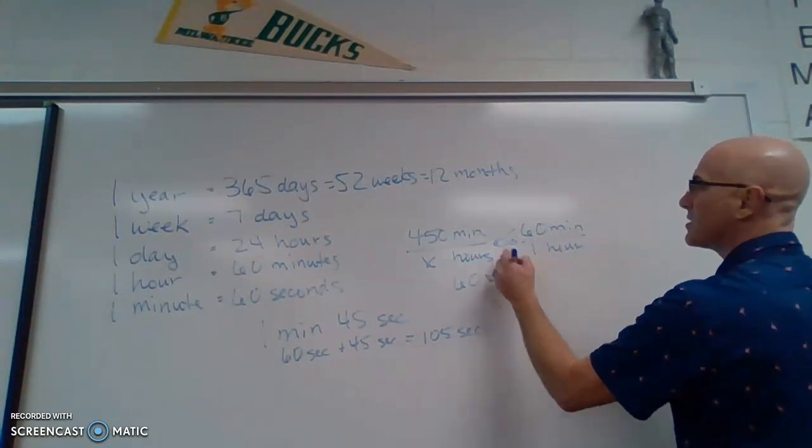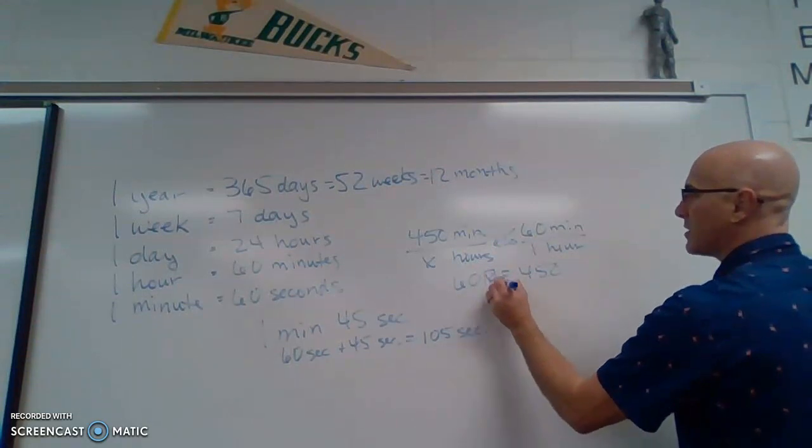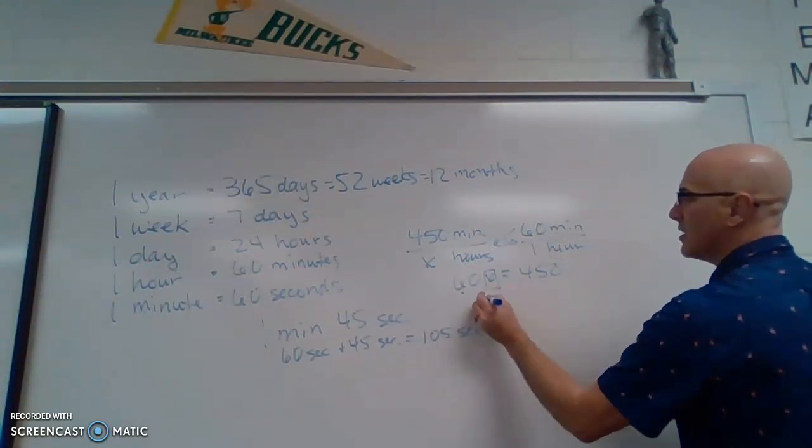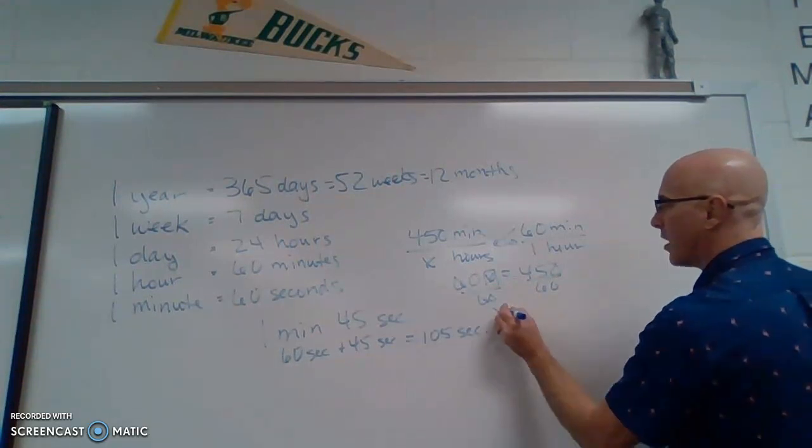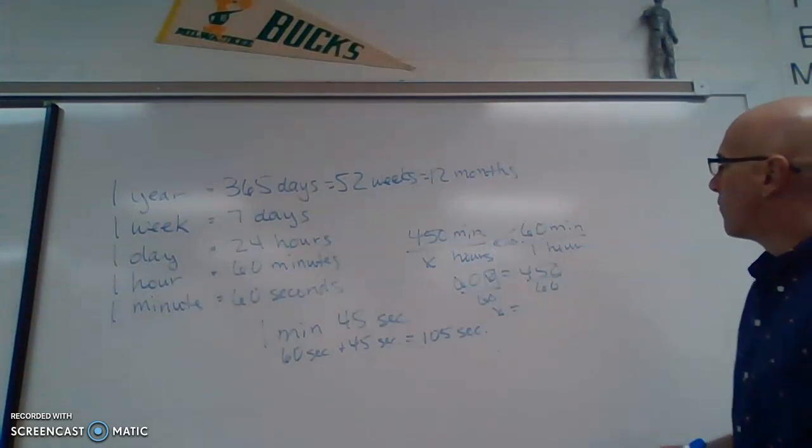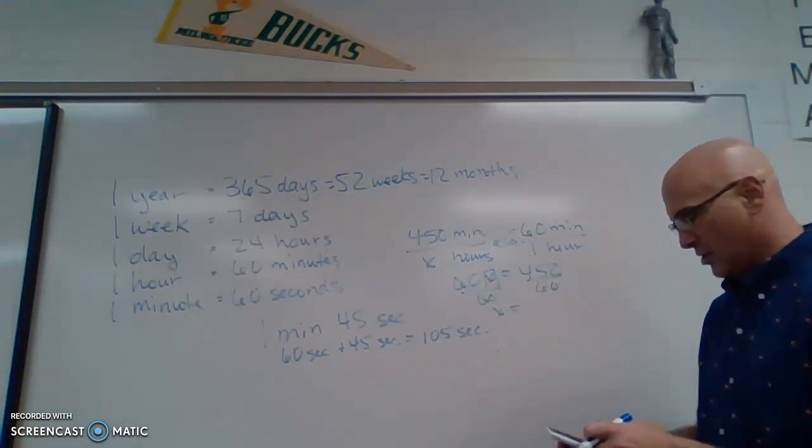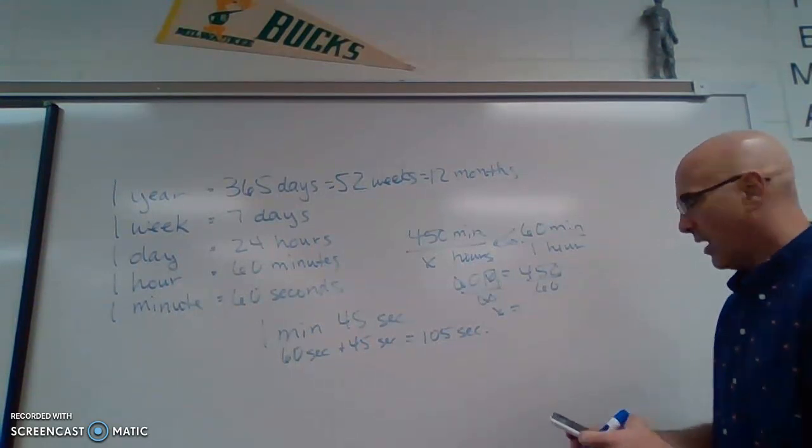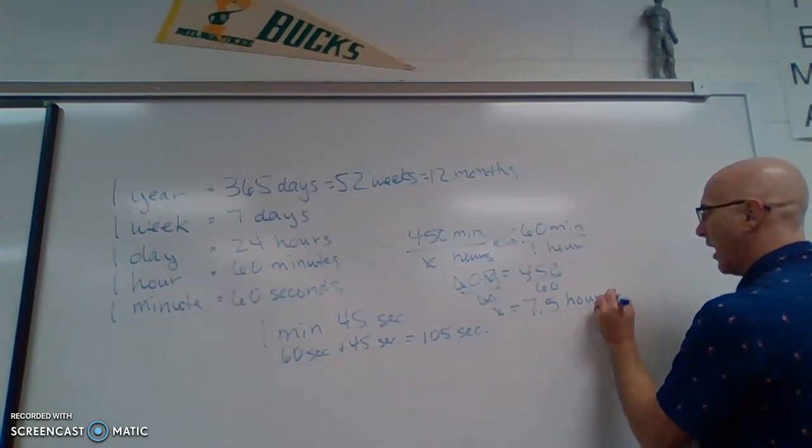And now I'm going to cross multiply. 60x equals 450. Now I'm going to isolate my x. Divide by 60. Cross off. And now I have 450 divided by 60. So I'm going to just use my calculator right now. And I get 7.5 hours.